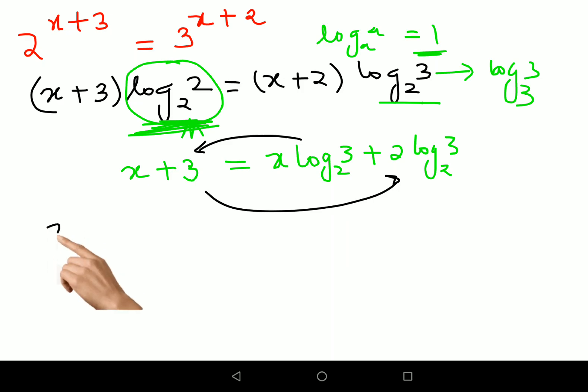Now what we'll do is we'll shift the numbers on one side and the variables on another side, so what we'll get over here is x minus x log 3 to the base 2 equals 2 log 3 to the base 2, can also be written as log of 9 to the base 2 minus 3.